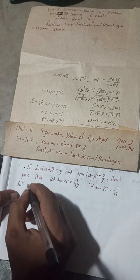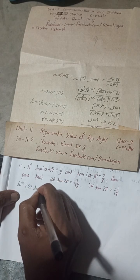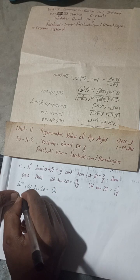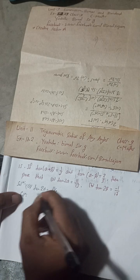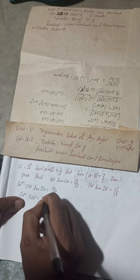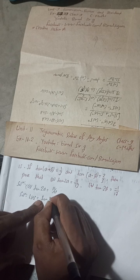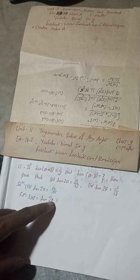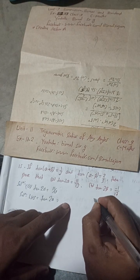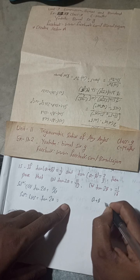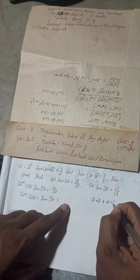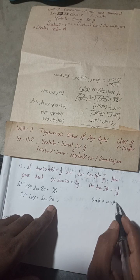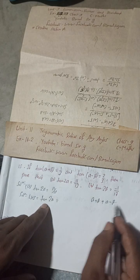In part (a), we have to prove that tan 2α = 11/13. LHS = tan 2α. Now, tan 2α can be written as tan((α+β) + (α−β)), because if we expand the bracket, β and −β cancel, leaving us with 2α.